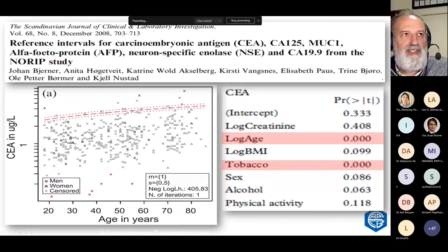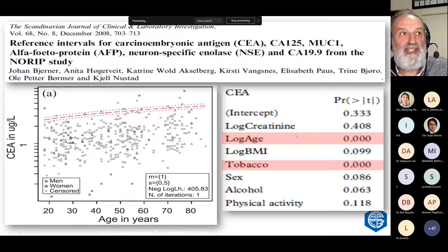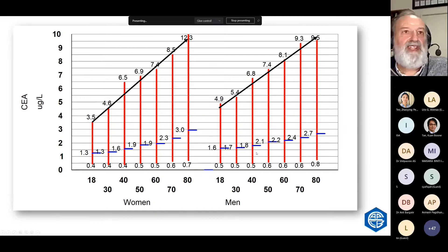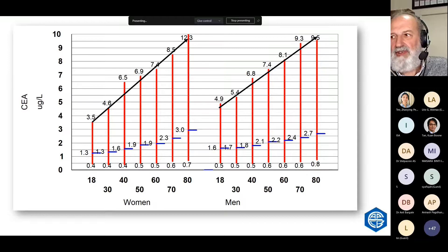One study I really like looked at many tumour markers and found what changes CEA in healthy volunteers — two things: age and smoking, with a p-value less than 0.001. When we looked at our data, CEA rises with age in men and women. We actually use these as reference intervals for CEA in our laboratory, because if you don't allow it to rise with age, you'll lose specificity in the elderly and have a whole lot of elderly patients flagging just because they're old.